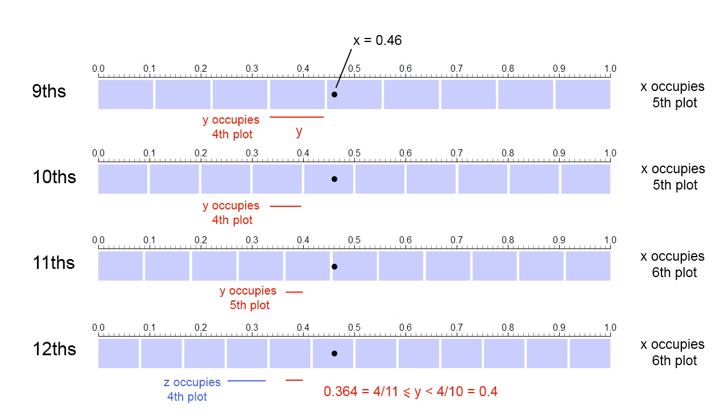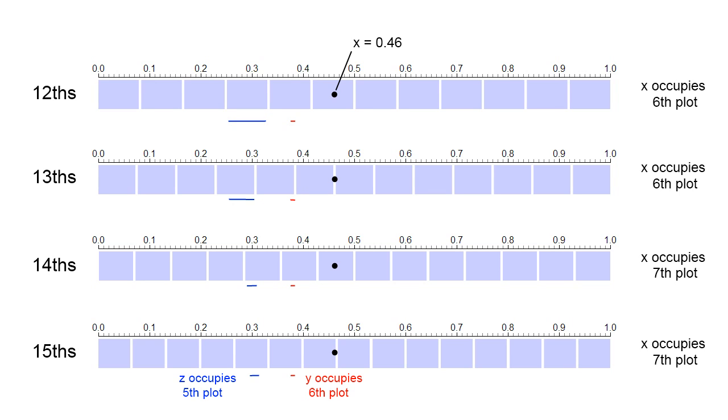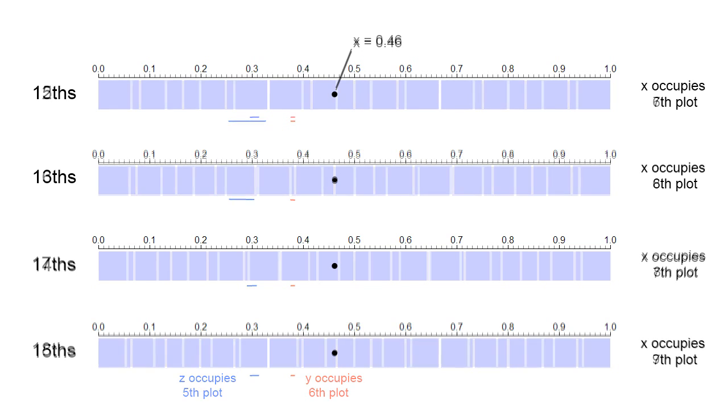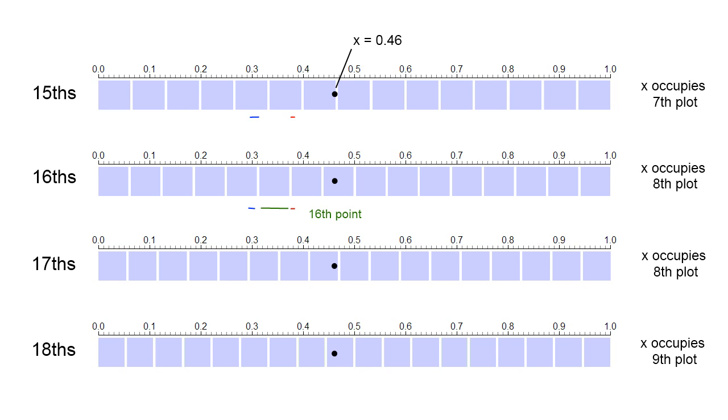Now let's add a new point. We'll call that z, and that occupies the fourth plot after division by twelve. And we're now going to go through the same process, considering what happens after division by thirteen, fourteen, and fifteen. And we'll discover that y occupies the sixth plot after division by fifteen, and z occupies the fifth plot after division by fifteen. Continuing on again, we now see that y occupies the seventh plot after division by sixteen, and z will occupy the fifth plot. But that means the sixth plot is going to be empty, so that must be filled with the sixteenth point.